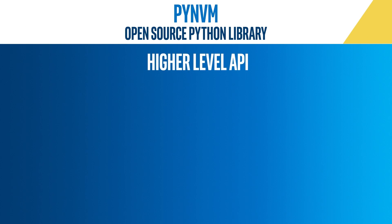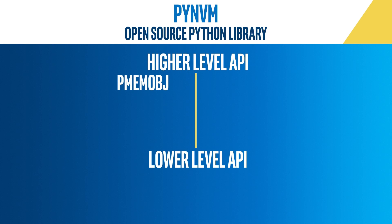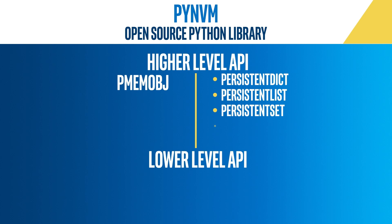The library is broken into a higher and a lower-level API. The higher-level API, called pmemobj, offers support for persistent containers: dictionaries, lists, sets, and tuples.